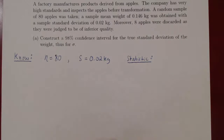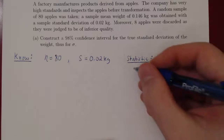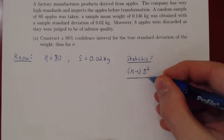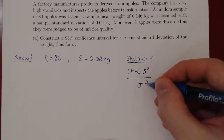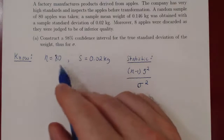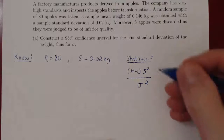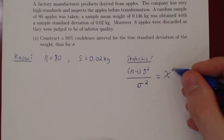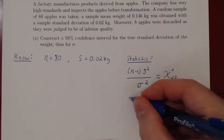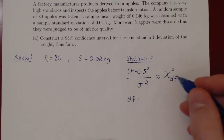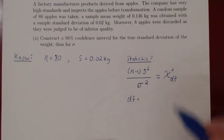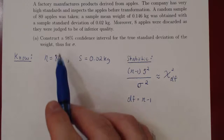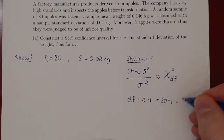In the case of a standard deviation, if you look at the summary sheet of confidence intervals, the statistic is n minus 1 times the sample deviation squared, so s-squared, over the true population standard deviation sigma also squared. Because we have a sample bigger than 30, we can use the central limit theorem, which says this is approximately a chi-square random variable with degrees of freedom n minus 1 — the same as in the t-distribution. Since our sample was of size 80, we get 80 minus 1, therefore 79 degrees of freedom.